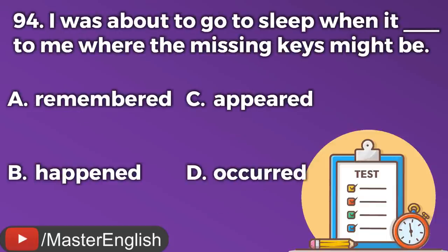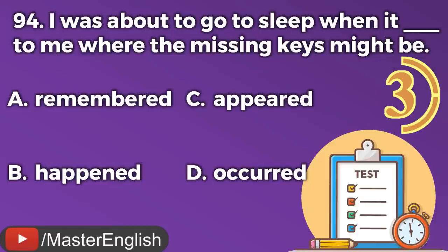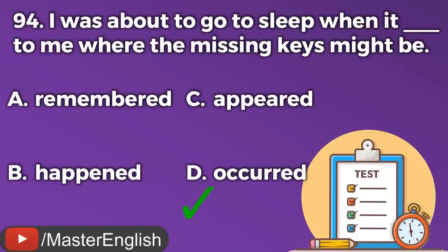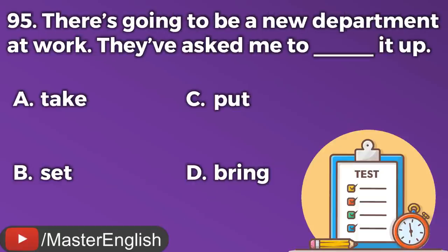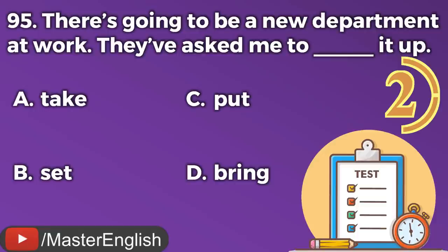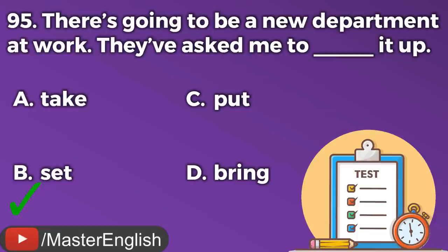Question number ninety-four. I was about to go to sleep when it ___ to me where the missing keys might be. A: Remembered. B: Happened. C: Appeared. D: Occurred. The correct answer is D: Occurred. It occurred to me where the missing keys might be. Question number ninety-five. There is going to be a new department at work. They've asked me to ___ it up. A: Take. B: Set. C: Put. D: Bring. The correct answer is B: Set. They've asked me to set it up.